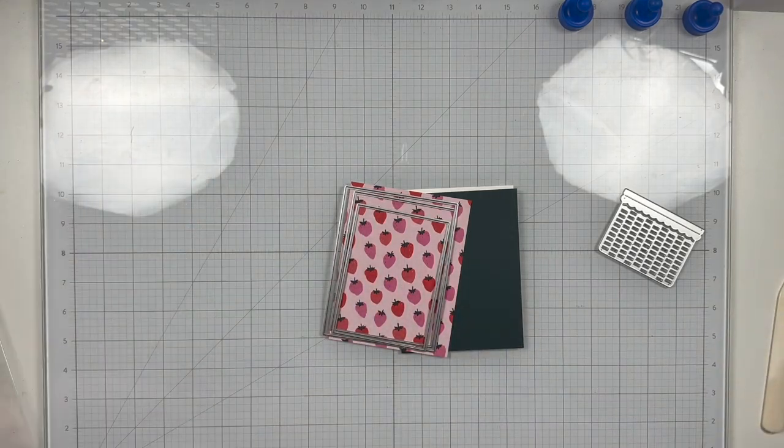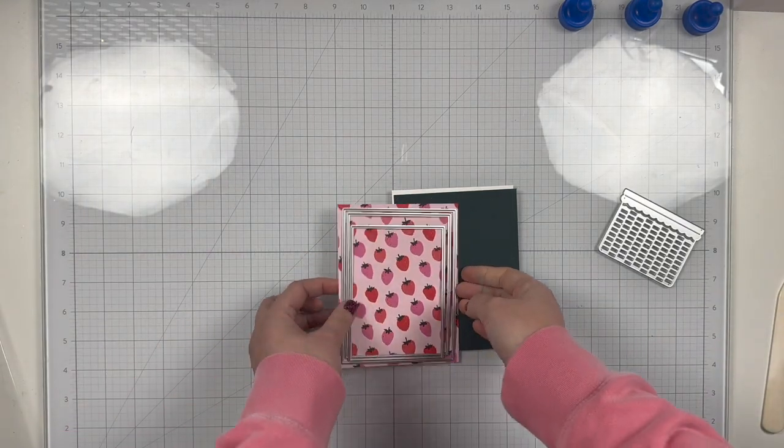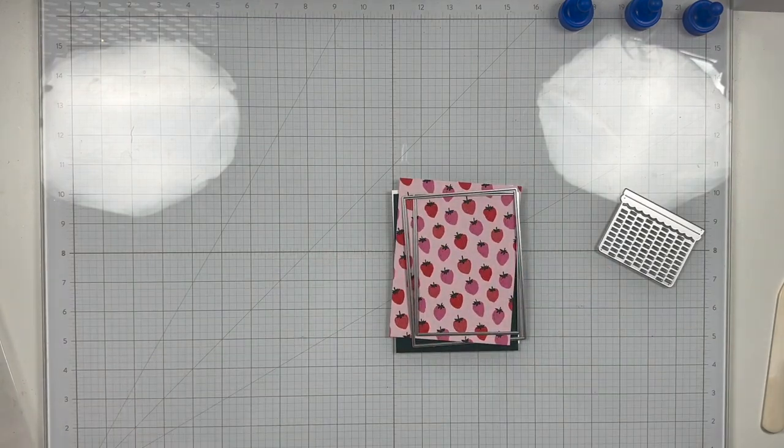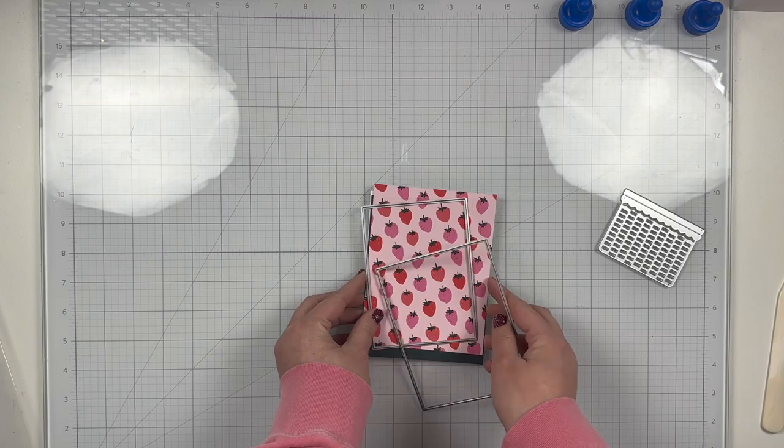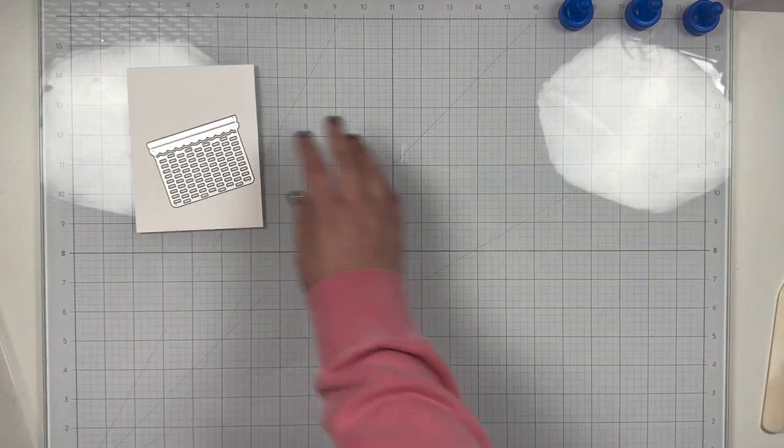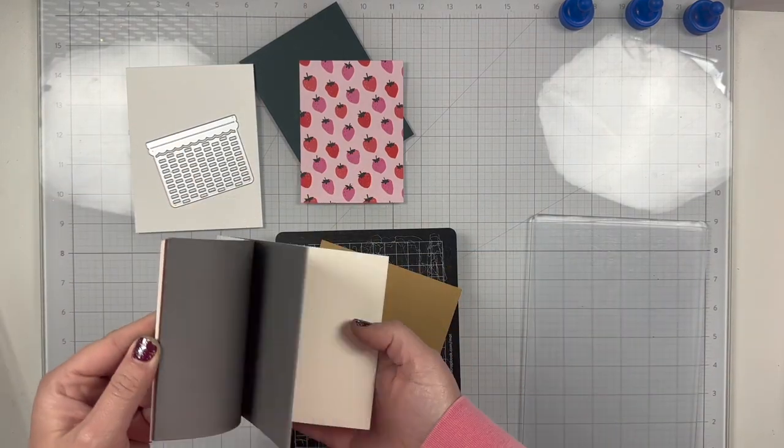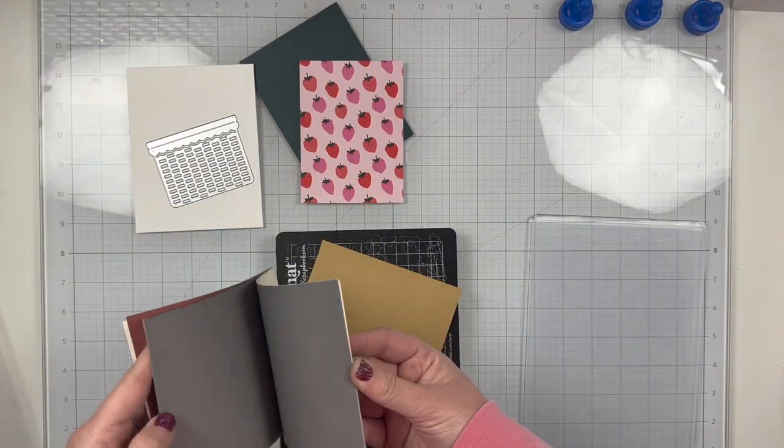I'm getting out my nested rectangle dies because I'm going to use the second largest A2 die. Well, this die is not A2. It's a step down from A2. And I'm cutting that with the green cardstock. And then I use the next smallest down, so the third die, to cut out the strawberries.